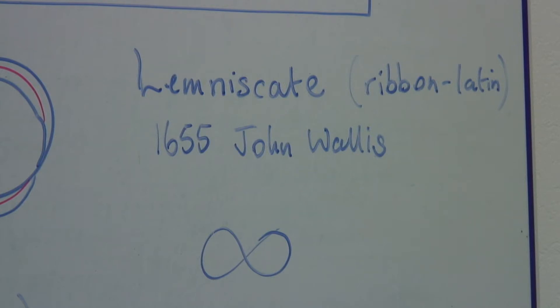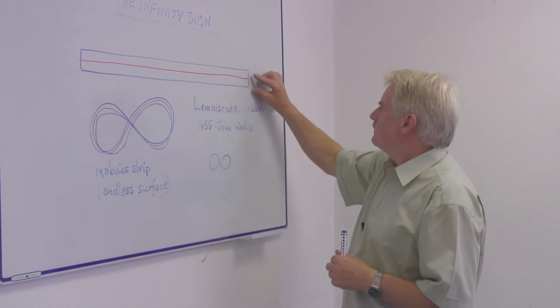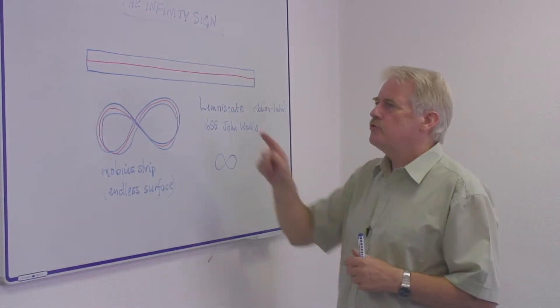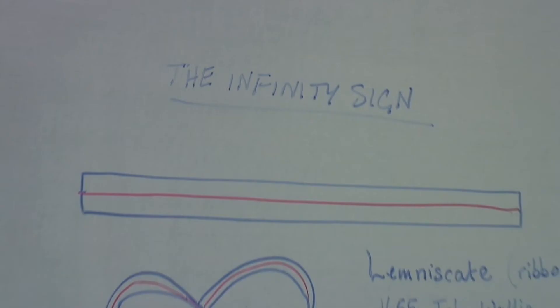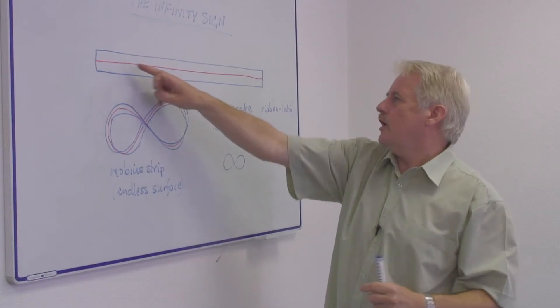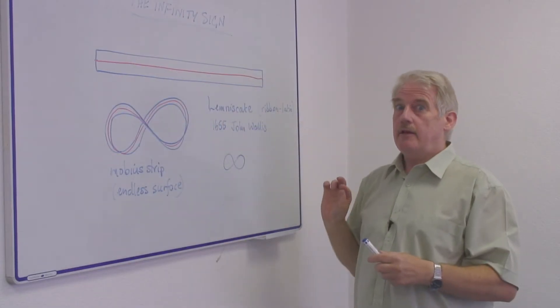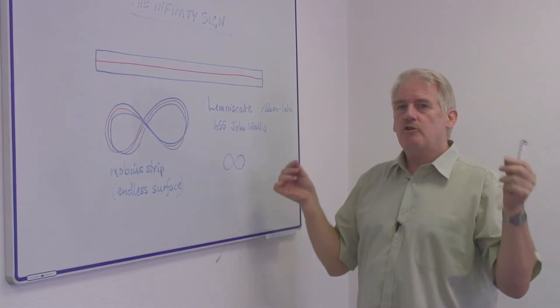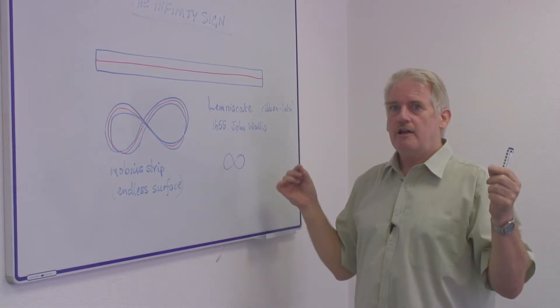Now, if you take a piece of paper, just a long strip of paper, and if you draw a line down it on one side, turn it over, and draw a line down it again on the other side, you have a single piece of paper with two lines on it.